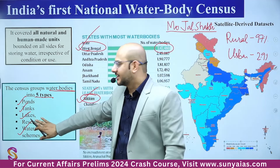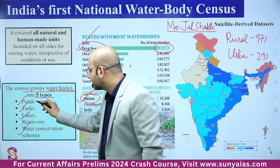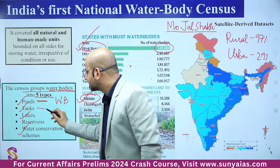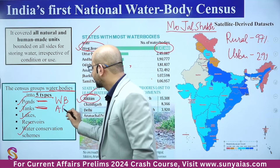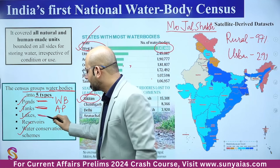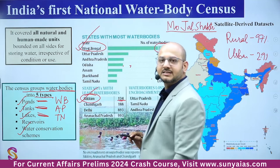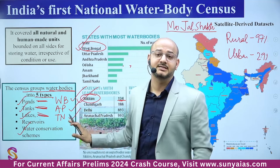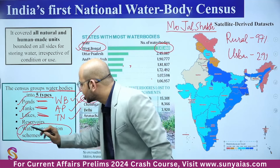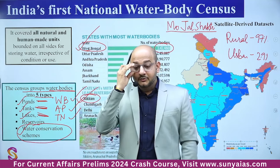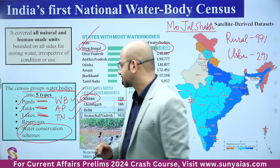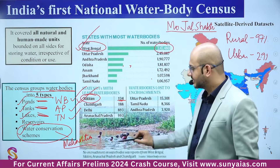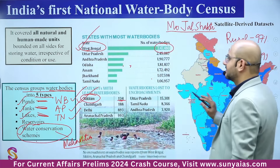Among the five types: maximum ponds are in West Bengal, maximum tanks are in Andhra Pradesh, and maximum lakes are in Tamil Nadu — a potential match-the-column question. For water conservation schemes, counter-intuitively it is not Rajasthan but Maharashtra that has the maximum water conservation schemes. This has been the distribution from the National Water Body Census.